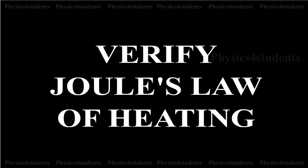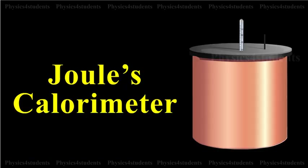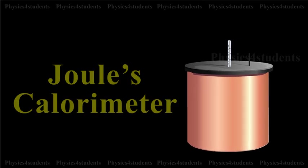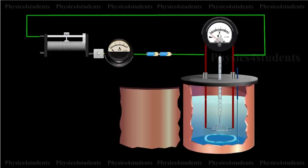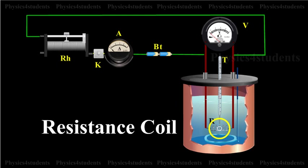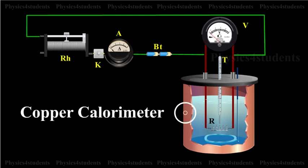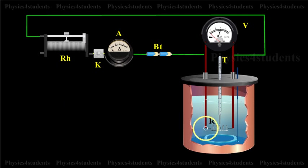Verification of Joule's law. Joule's law is verified using Joule's calorimeter. It consists of a resistance coil R, enclosed inside a copper calorimeter. The ends of the coil are connected to two terminals fixed to the lid of the calorimeter.